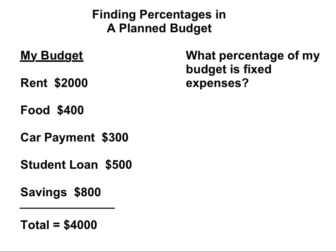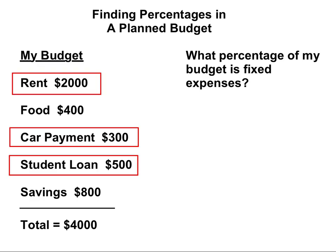In this example, we want to find what percentage of this monthly budget is made up of fixed expenses. The first step is to identify which of these budget items are fixed expenses. A fixed expense is something for which the dollar amount will be the same every month.